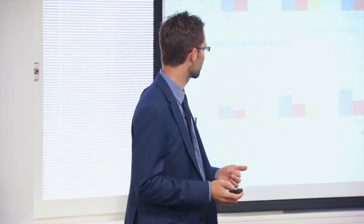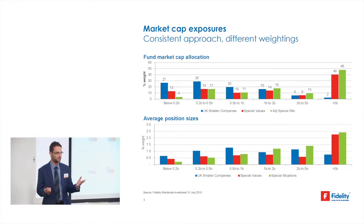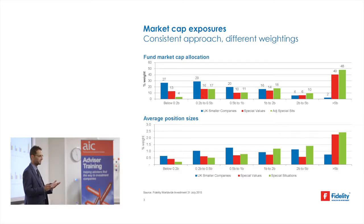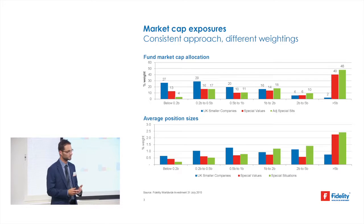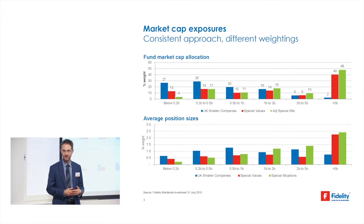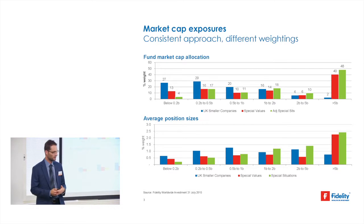This slide we use in general marketing discussions for all three funds to show the key difference between them — it's all about the market cap differentials. Overall I'm very much a mid and small cap biased investor. In Special Situations, the big open-ended fund, small cap is about 50%. But in the investment trust, which is benchmarked against the All Share Index, small cap is more like 60%.